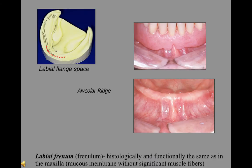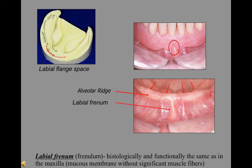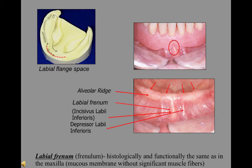The alveolar ridge is a secondary support area with a high rate of resorption when excessive pressure is applied. The labial frenum, histologically and functionally, is the same as in the maxilla — mucous membrane without significant muscle fibers. Underlying muscle fibers in this area are the incisivus labii inferioris and depressor labii inferioris.